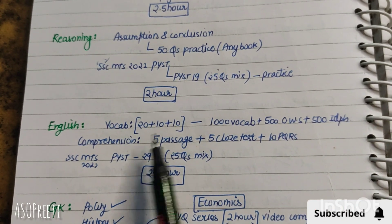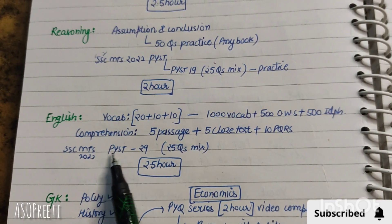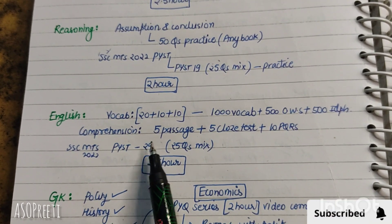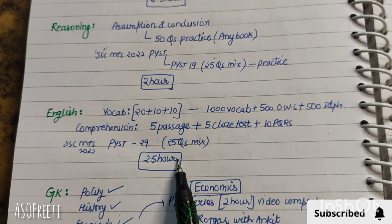And in comprehension, you will do 5 passages and 5 cloze test and 10 PQRs. MTS 2022 paper 19 sectional test will be completed, 25 questions in half an hour.